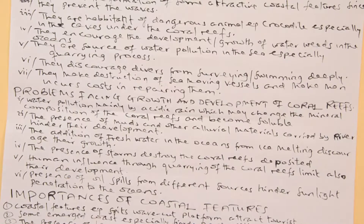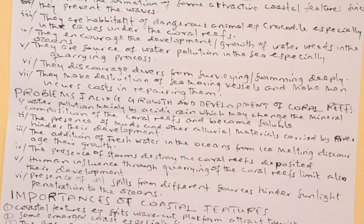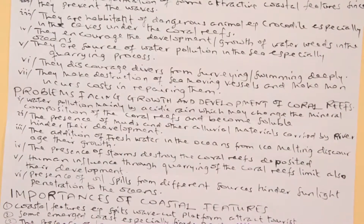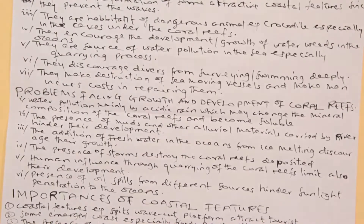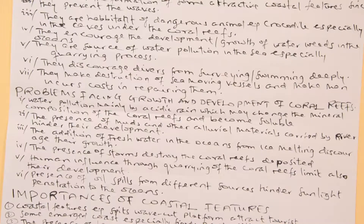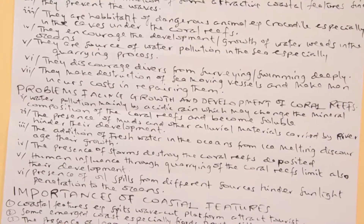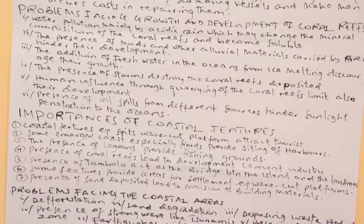Another problem is the presence of oil spills from different sources, which hinder sunlight penetration into the ocean. Wherever there is a ship transporting oil and it spills into the water bodies, even penetration of sun rays will be impossible because most of the sun rays will be absorbed by this oil. Therefore, the heating capacity needed by this organism will not reach the polyp, and enrichment to maturity will be impossible.